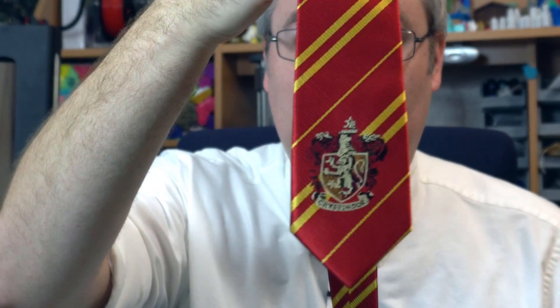It was a yellow and red striped tie with a familiar emblem on the bottom. I have been sorted. I am officially a Gryffindor. I'm pretty happy about that. Now that you guys know the tie, I should put it on. A little bit of magic there.